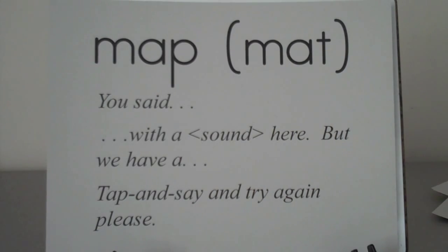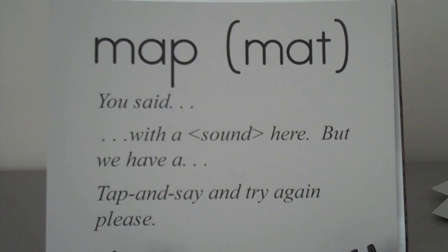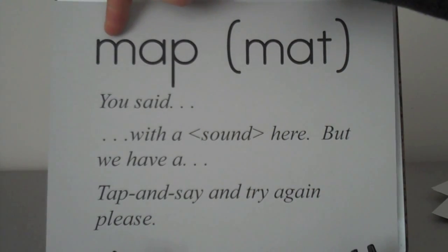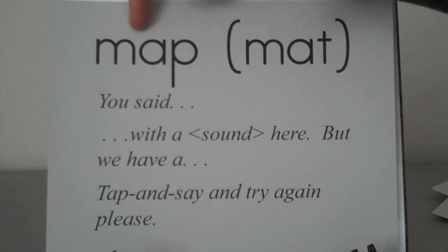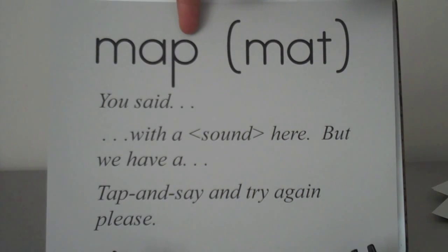And finally, here's an example where the student looks at the word map and says mat. Correct along with me: You said mat with a t here, but we have p. Tap and say and try again, please.